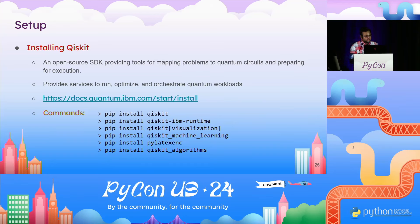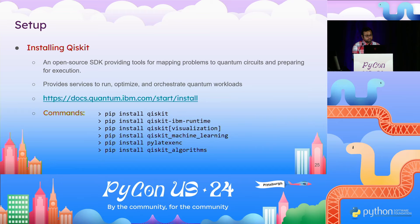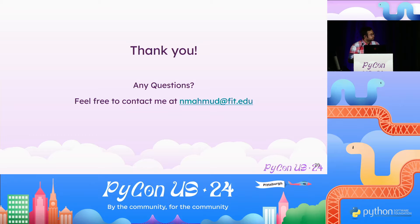I'm almost at the end of my talk. I'm providing a link where you can install Qiskit, along with a tutorial on which modules to install to develop a framework similar to this. The modules I installed for this work were Qiskit, Qiskit IBM Runtime, Qiskit Visualization, Machine Learning, PyLATIC, and Qiskit Algorithms for the classical optimizer algorithms. That's the end of my talk — thank you very much for listening, and if you have any questions, please let me know.